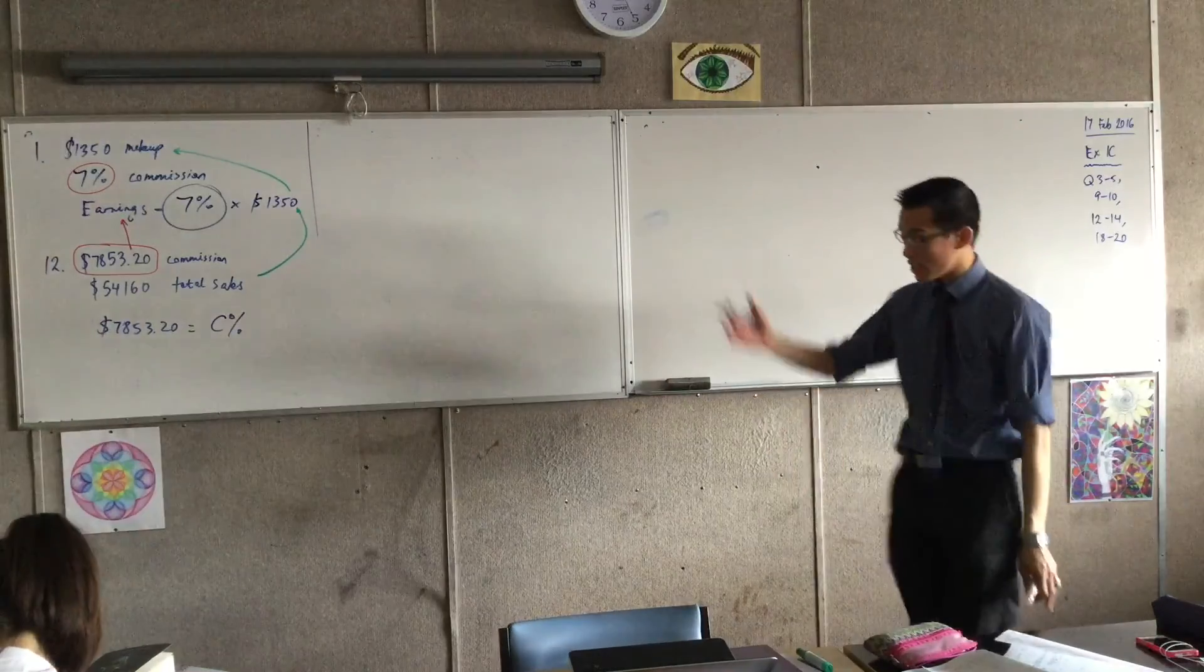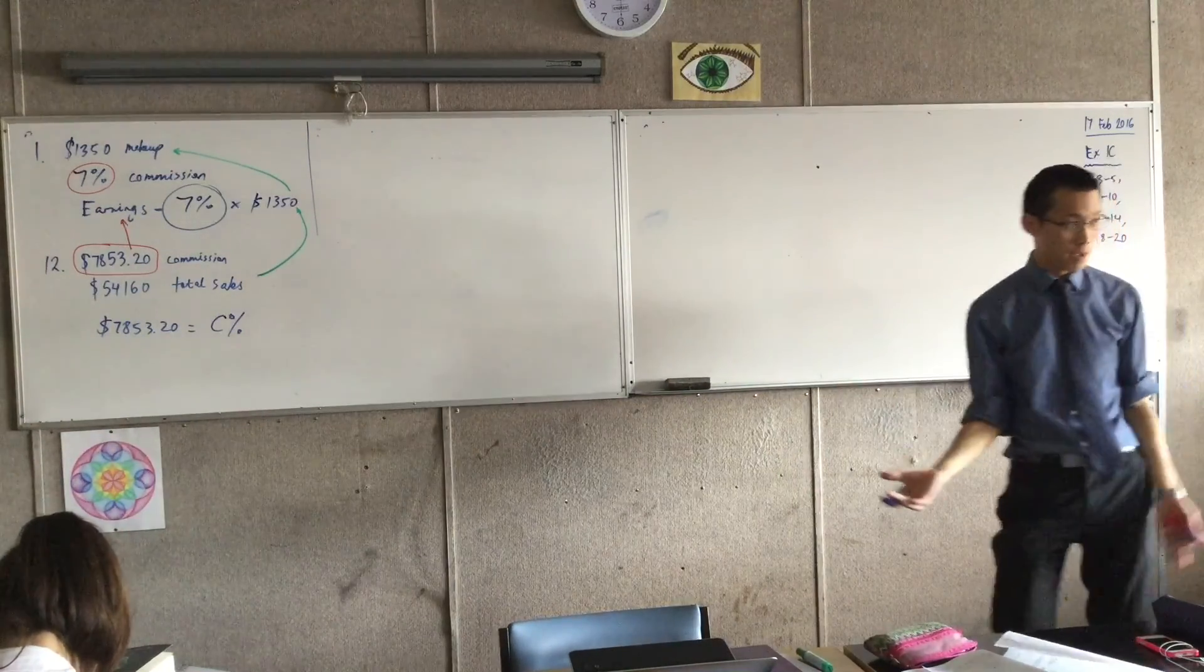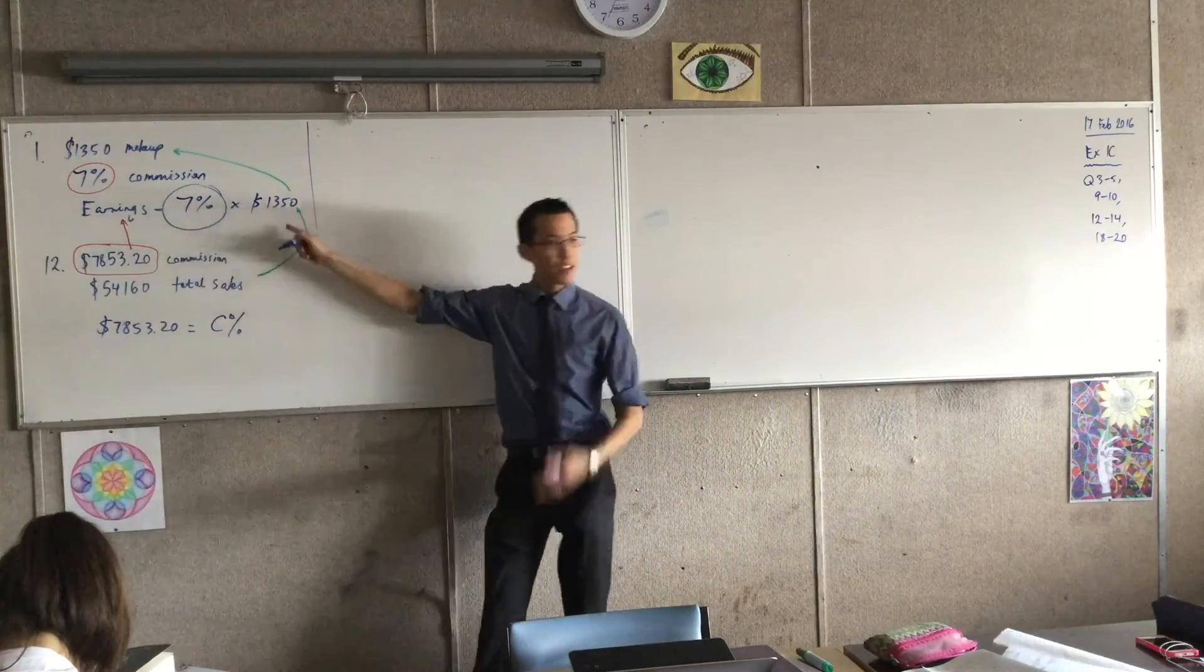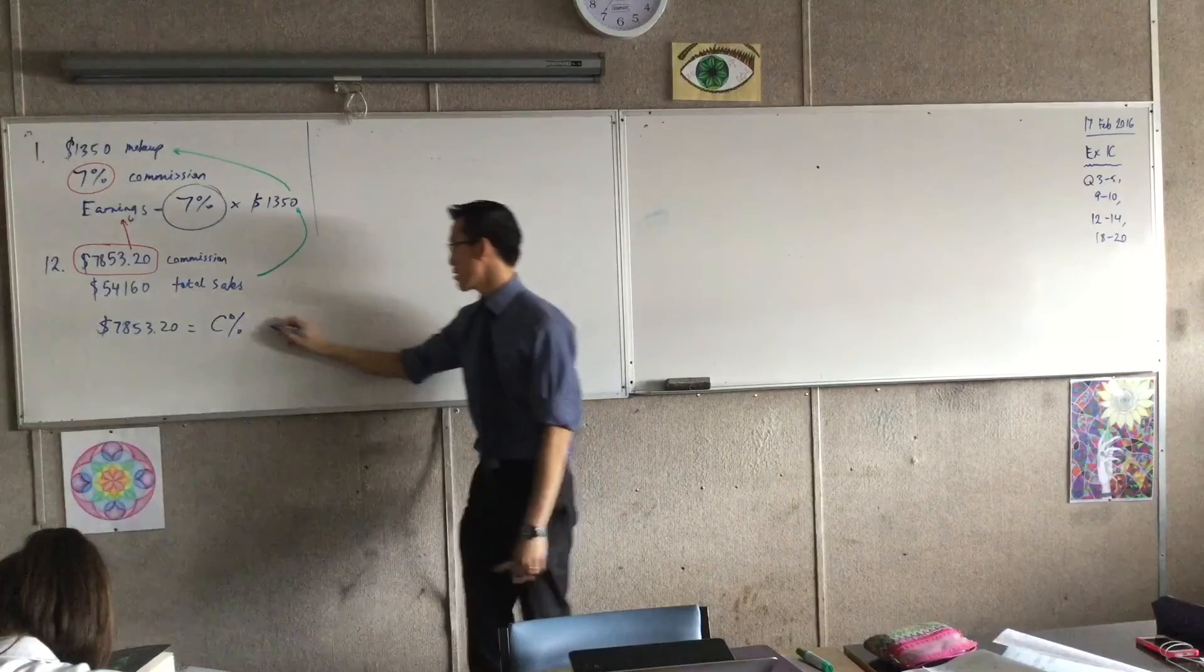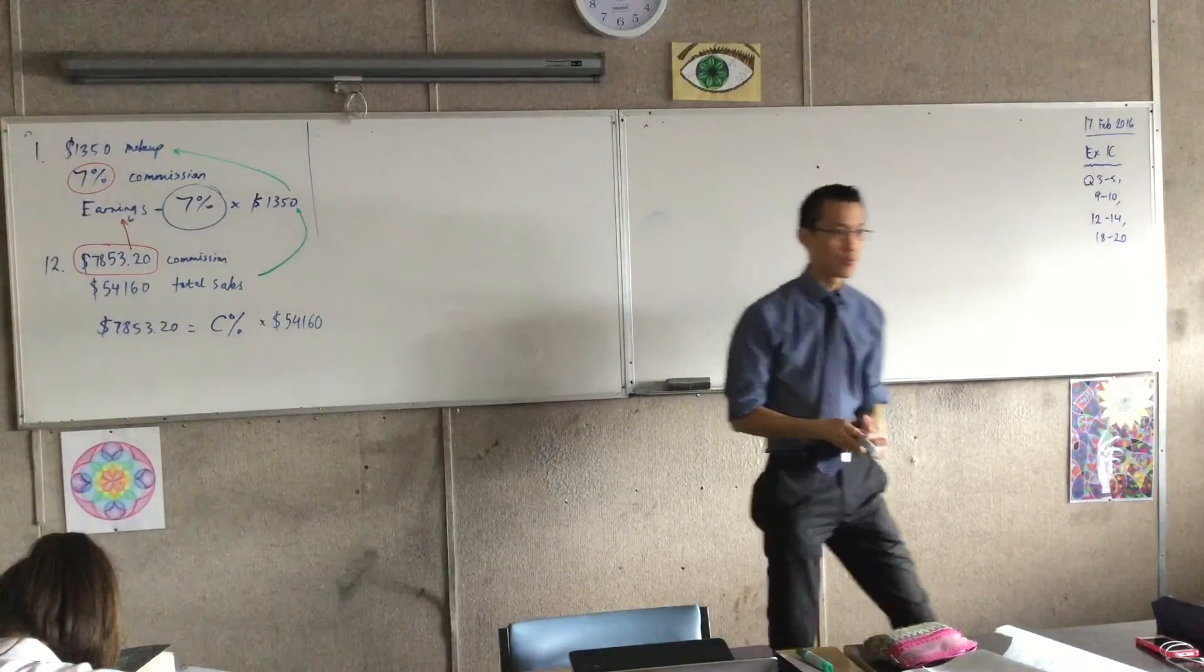The superpower of algebra is working with numbers even when you don't know what the numbers are. You just give it a name and you just go for it. I'll call it C for commission, and it's a percentage multiplied by the total sales, and I have a value over there, so I'm just going to pop that.